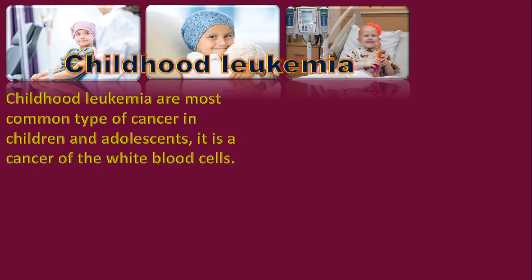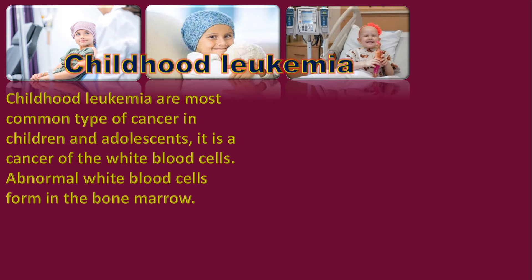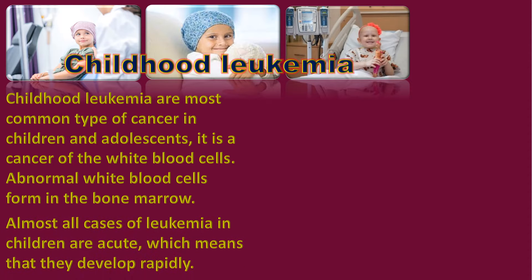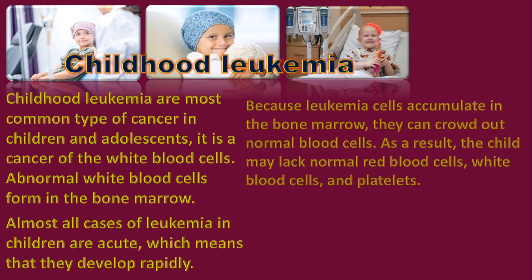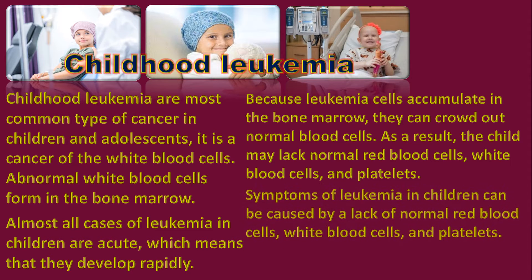Childhood leukemia is the most common type of cancer in children and adolescents. It is a cancer of the white blood cells, where abnormal white blood cells form in the bone marrow. Almost all cases of leukemia in children are acute, meaning they develop rapidly. Because leukemia cells accumulate in the bone marrow, they can crowd out normal blood cells, leaving the child lacking normal red blood cells, white blood cells, and platelets.